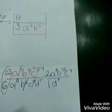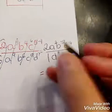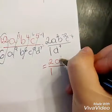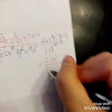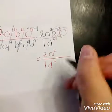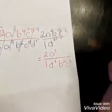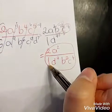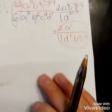One last step: move whatever is negative, which is b and c. I keep the coefficient 2 over 1 and a to the power of 2 since it's positive. B to the negative 2 and c to the negative 4 are moved to the bottom and made positive. D to the power of 7 is already there. So the final answer is 2a² over d⁷b²c⁴. Everything positive.